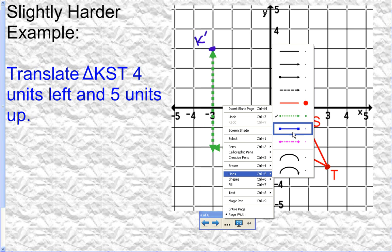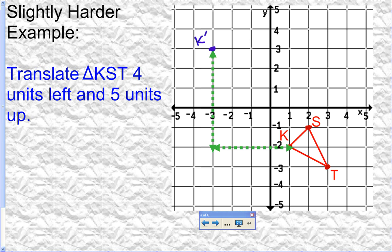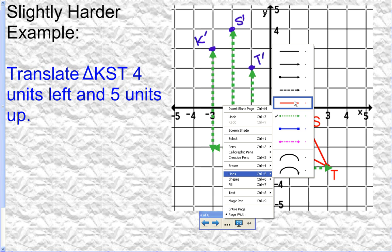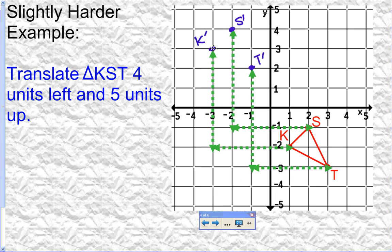Now translate S — four units left: one, two, three, four — five units up: one, two, three, four, five. Do the same for T — four units left: one, two, three, four — five units up: one, two, three, four, five. Label these points S prime and T prime. Now connect the dots to reform the triangle. We've translated KST four units left and five units up. Break it into the three points, move them, and reconnect — it's as simple as that.